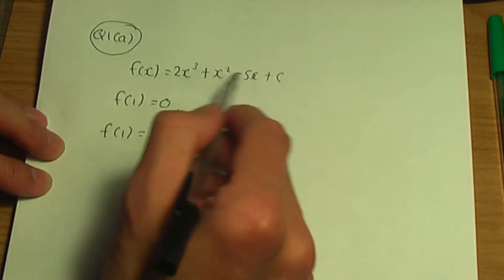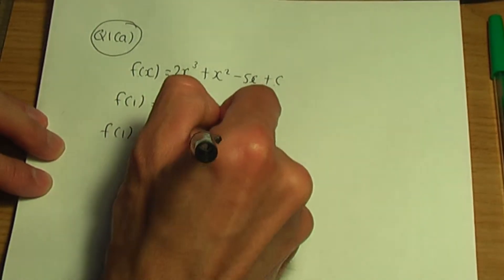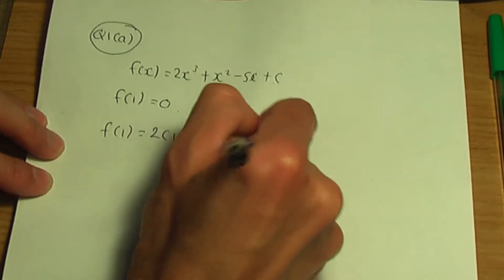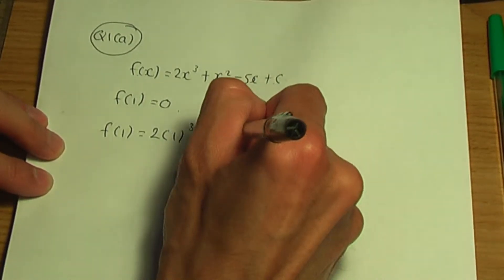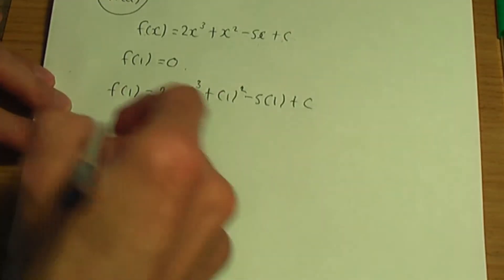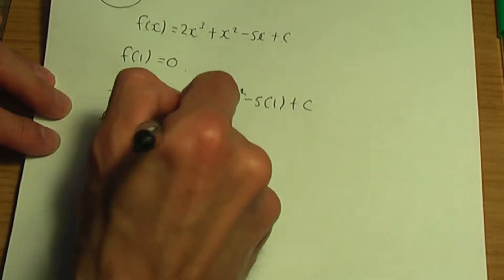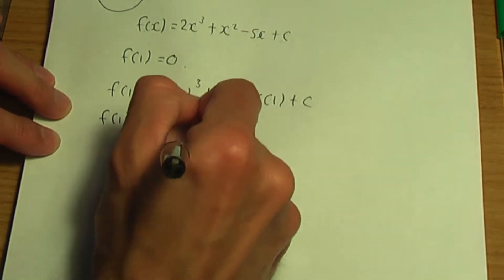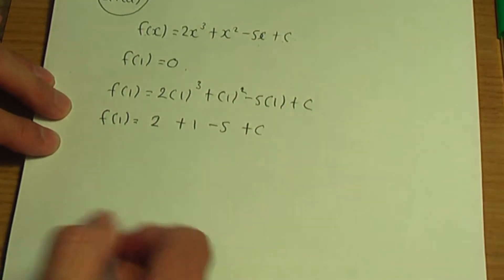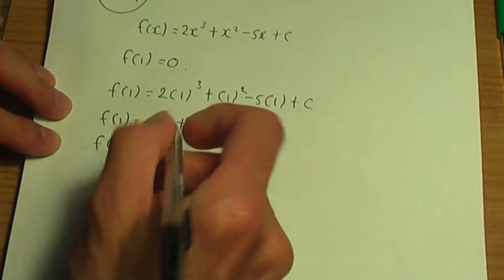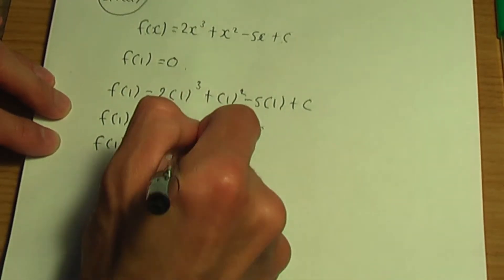So f of 1 will be, if I replace the x's by 1's, we get 2 into 1 cubed plus 1 squared minus 5 into 1 plus c. Simplifying: 2 into 1 cubed is 2, plus 1 squared is 1, minus 5 into 1 is minus 5, plus c. So 2 plus 1 is 3, minus 5 is minus 2 plus c.